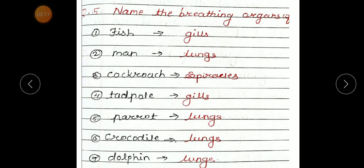Now, question number 5, name the breathing organs of. Tell me first, fish, the breathing organs of fish, gills. Man, lungs. Cockroach, spiracles. Tadpole, gills.